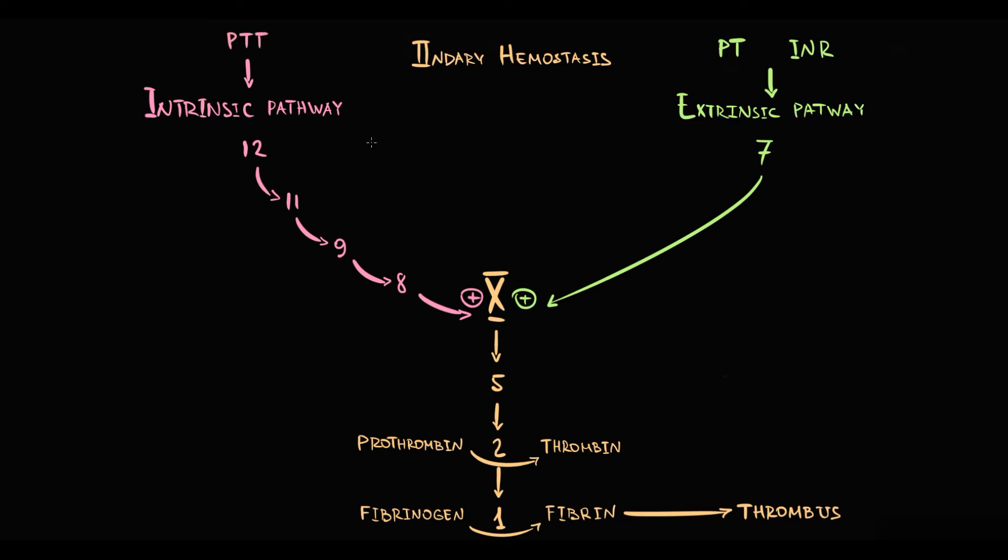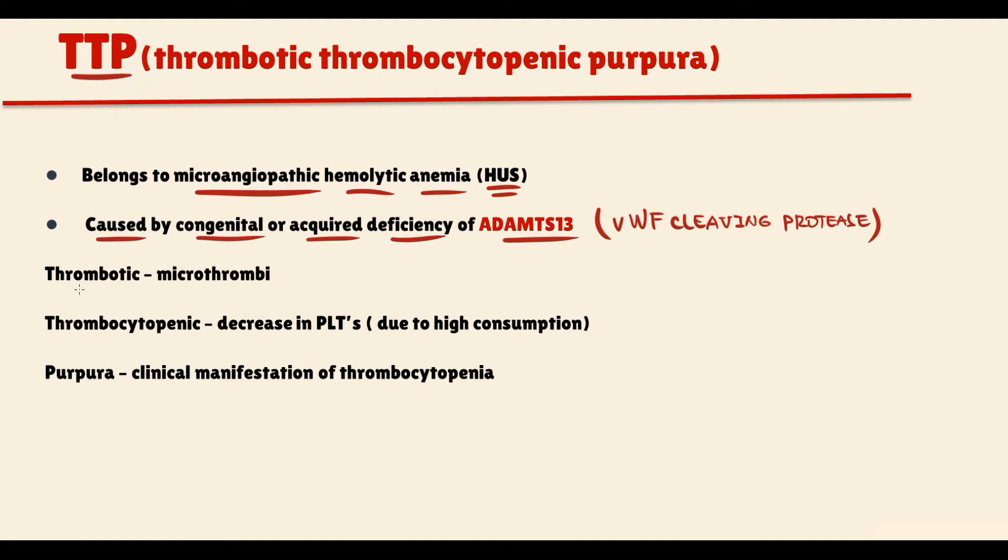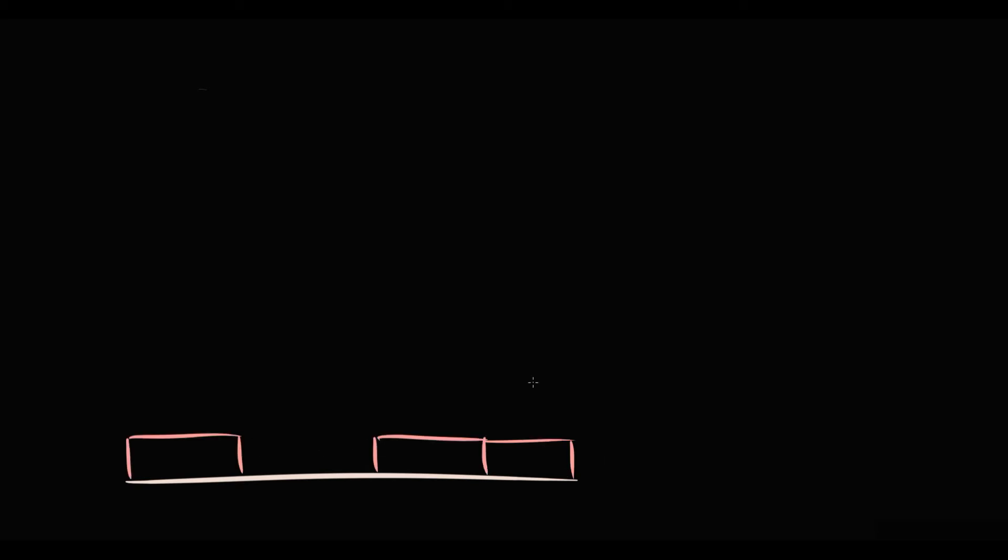Now why this condition called thrombotic thrombocytopenic purpura? Thrombotic because microthrombi formed. Thrombocytopenic because high amount of platelets are consumed for thrombi formation. And purpura because decreased platelet count manifests with purpura. So to explain this disorder, we have to know how these microthrombi formed. Recall that with injury, endothelial cells release von Willebrand factor that provides binding of platelets to subendothelial collagen. And this step we called platelet adhesion. But the specific feature is that endothelial cells release von Willebrand factor as multimer. Basically, it is a huge amount of von Willebrand factor molecules that are connected with each other.